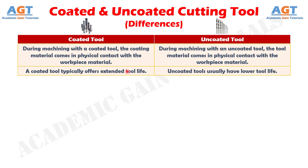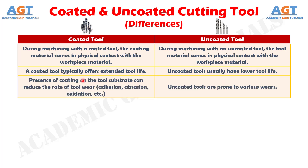Number 2. A coated tool typically offers extended tool life, whereas uncoated tools usually have lower tool life. Number 3. Presence of coating on the tool substrate can reduce the rate of tool wear — adhesion, abrasion, oxidation, etc. — whereas uncoated tools are prone to various wears.